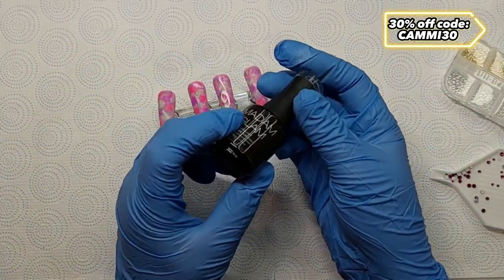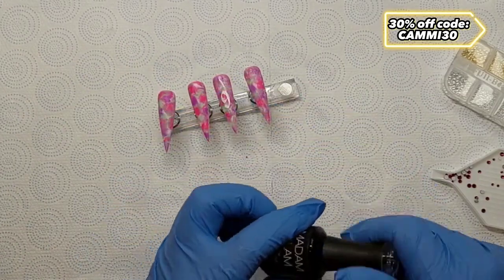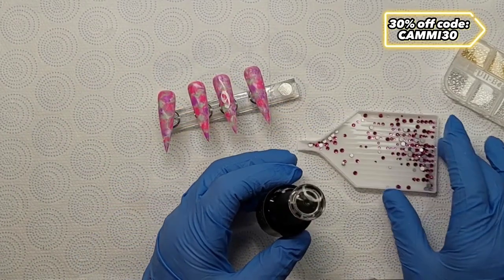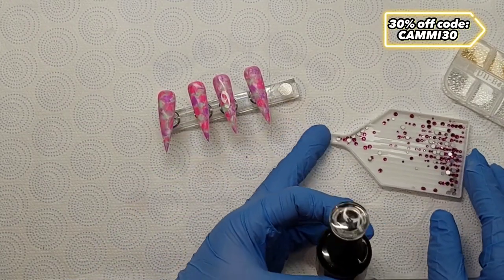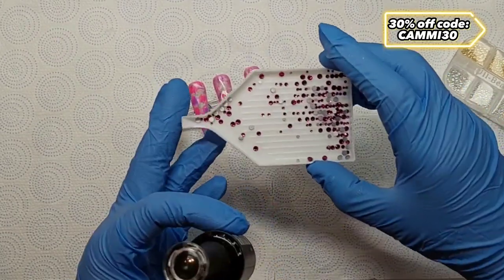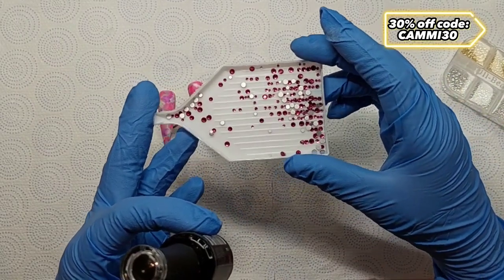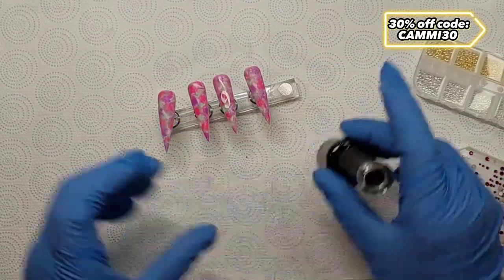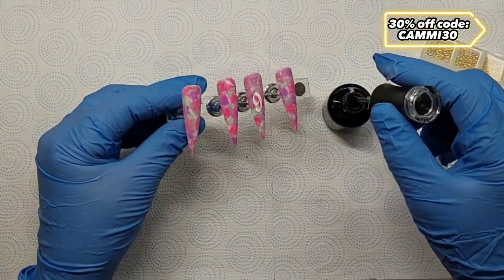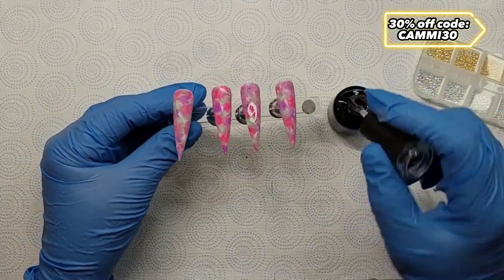Okay, I'm gonna go over with the no-wipe top coat from Madam Glam and then I'm gonna just put some cuticle cuffs on top of the nails with these - it's like a pinky purple - and some caviar beads. So I'll show you one nail and then I will do the rest off camera.